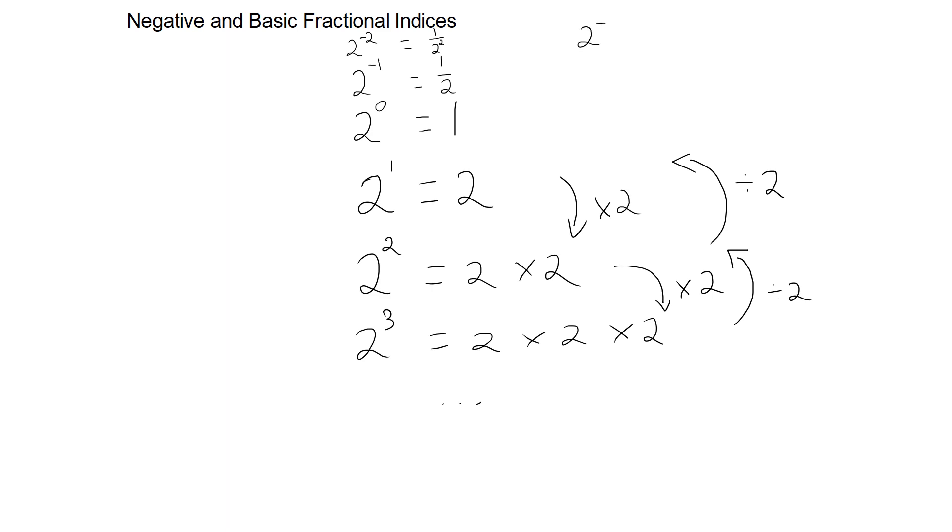To go from 2 to the minus 3, we will divide by 2, which will give you 1 eighth, which is 1 over 2 to the power of 3.